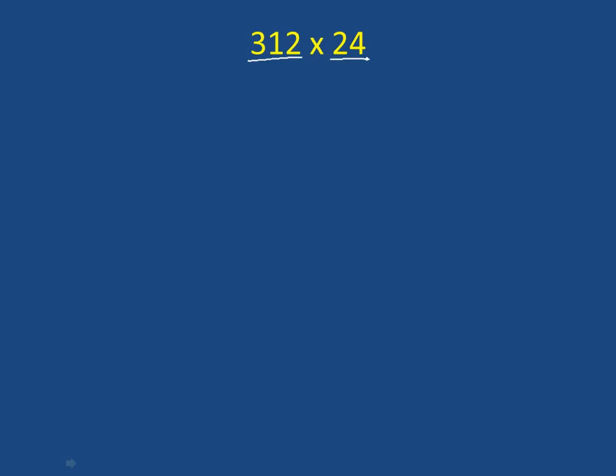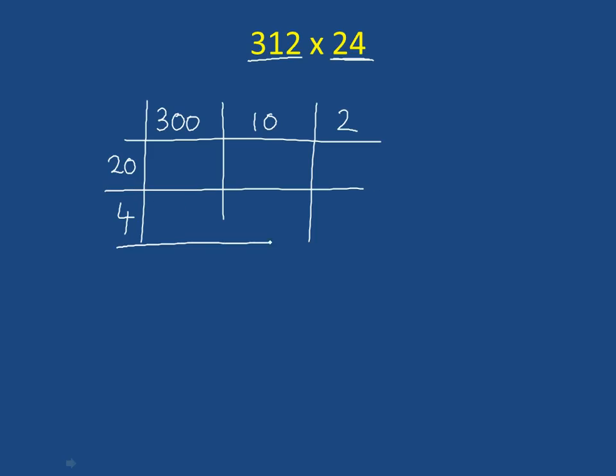So firstly, let's split up the 312 into 300, 10, and 2. So that's going to be the start of our grid. So that goes along the top of our grid. Along the side of our grid, we want 24. So we're going to have 20 and 4. And now we've completed our grid. We just need to work out what goes in the boxes.